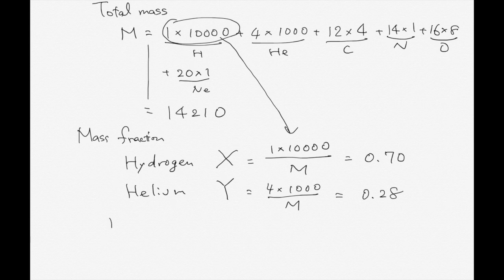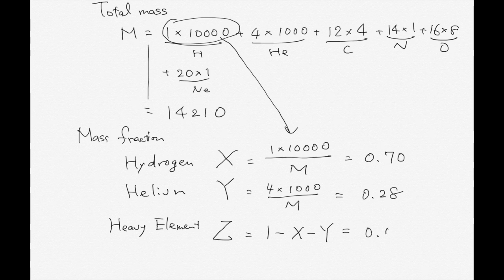And the heavy element, we use capital Z. So you can easily calculate. It's 1 minus X minus Y. It becomes 0.02. In astronomy, scientists often do not care about the mass fraction of each heavy element, and they use Z to describe the mass fraction of all the heavy elements. So this is the end of this practice.